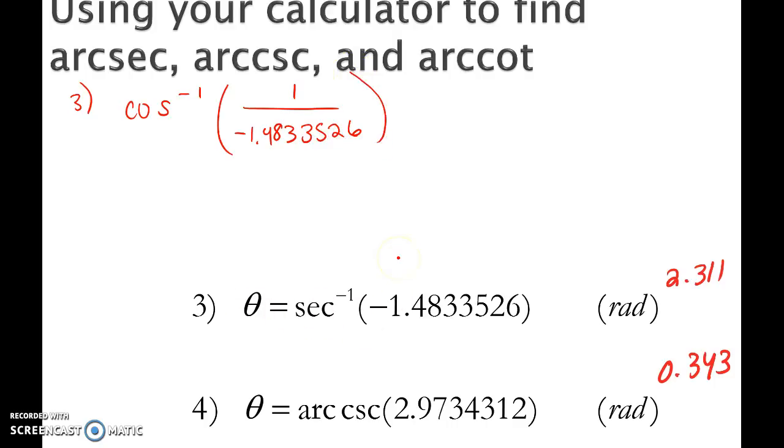Question 3 is saying what angle has a secant ratio of negative 1.48? Well, if I were to type in cosine inverse of negative 1.48, that wouldn't work because cosine is not allowed to have a ratio that is smaller than negative 1. So we have to remember to use the reciprocal function inverse of the reciprocal. Go ahead and enter these two and verify that you get the correct answers.